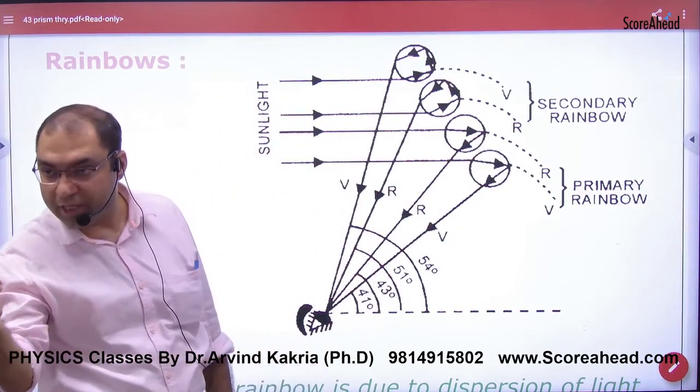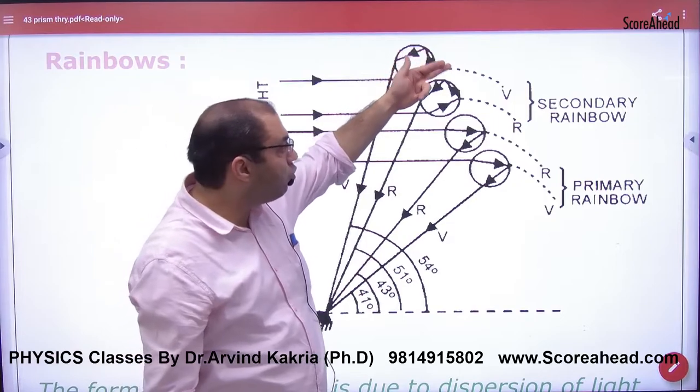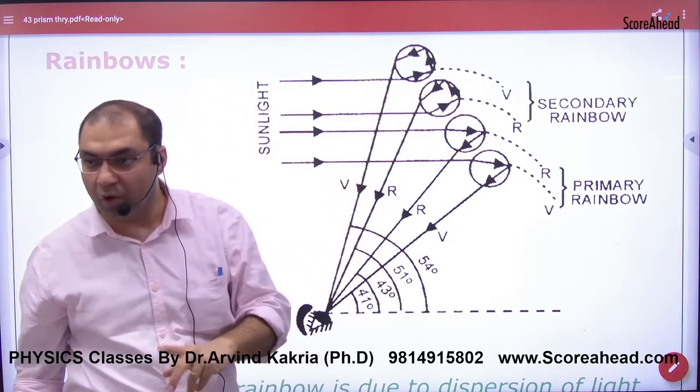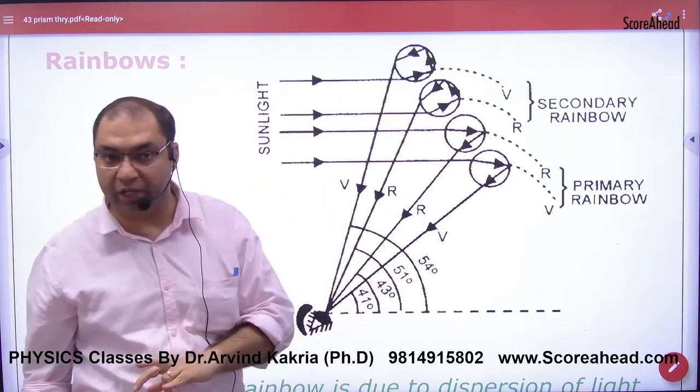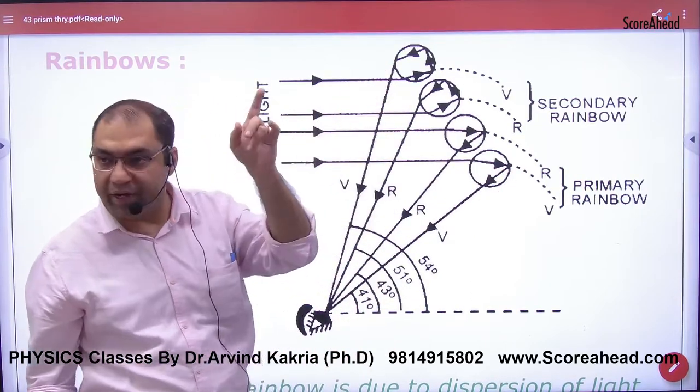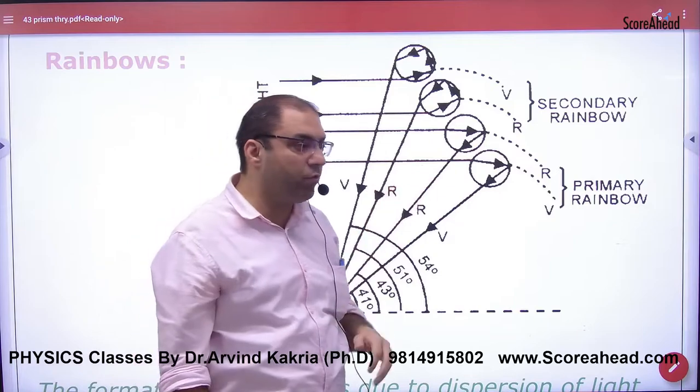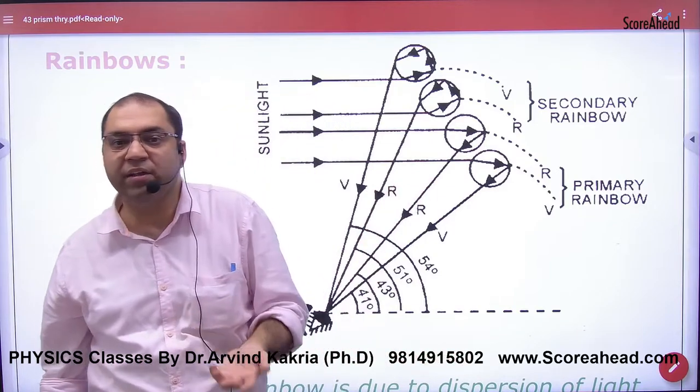If two TIRs occur and light comes to the observer's eyes, the observer will be standing here with the sun behind, and they will see a rainbow. With two TIRs, violet appears on top and red below. With one TIR, red appears on top and violet below. The upper rainbow is called the secondary rainbow and the lower one is called primary.